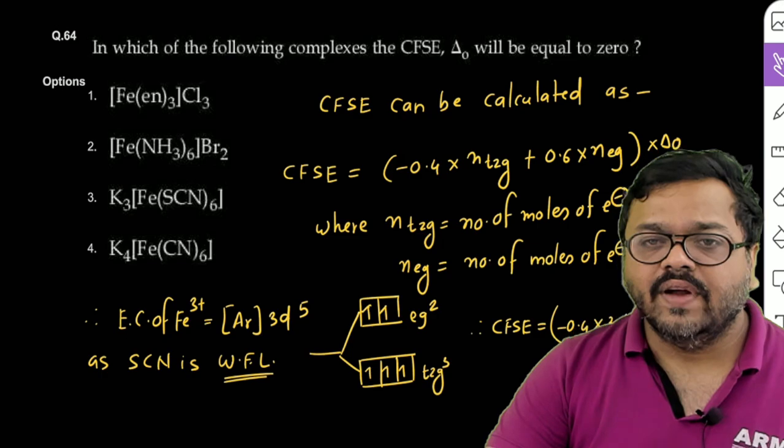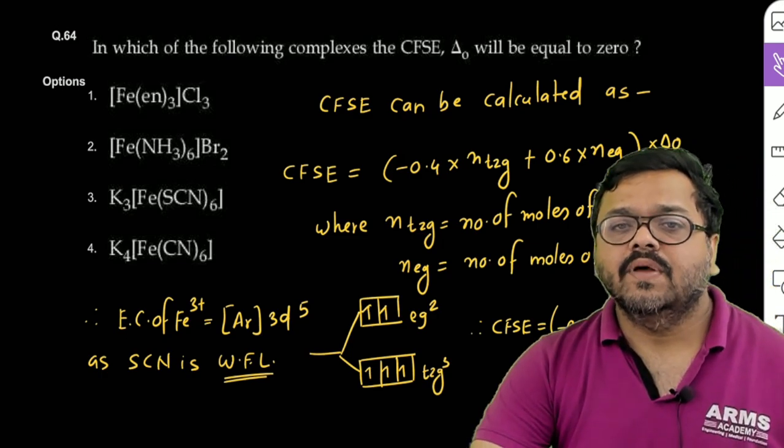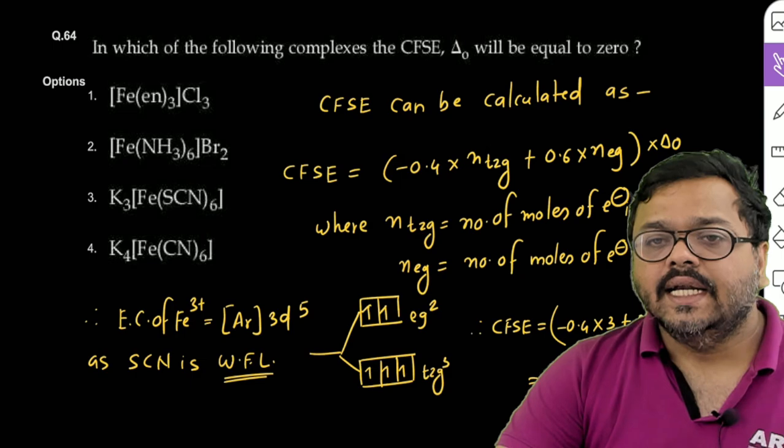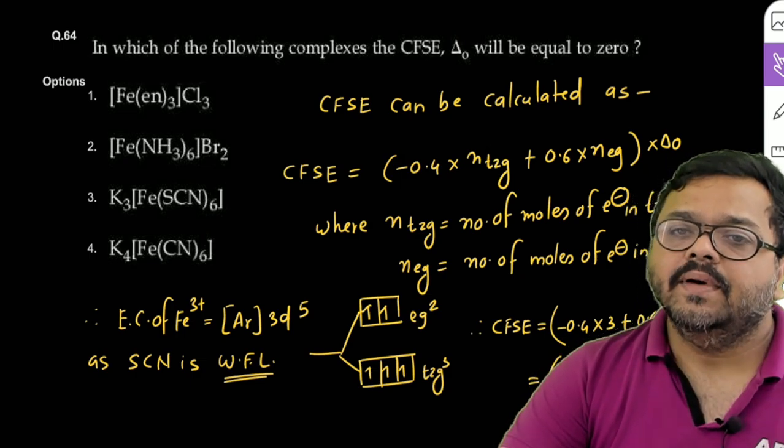So as SCN is a weak field ligand, to sare ke sare Fe ke jo 5 electrons hai, woh 5 ke 5 electrons, T2G me 3 jayenge aur EG me 2 jayenge.